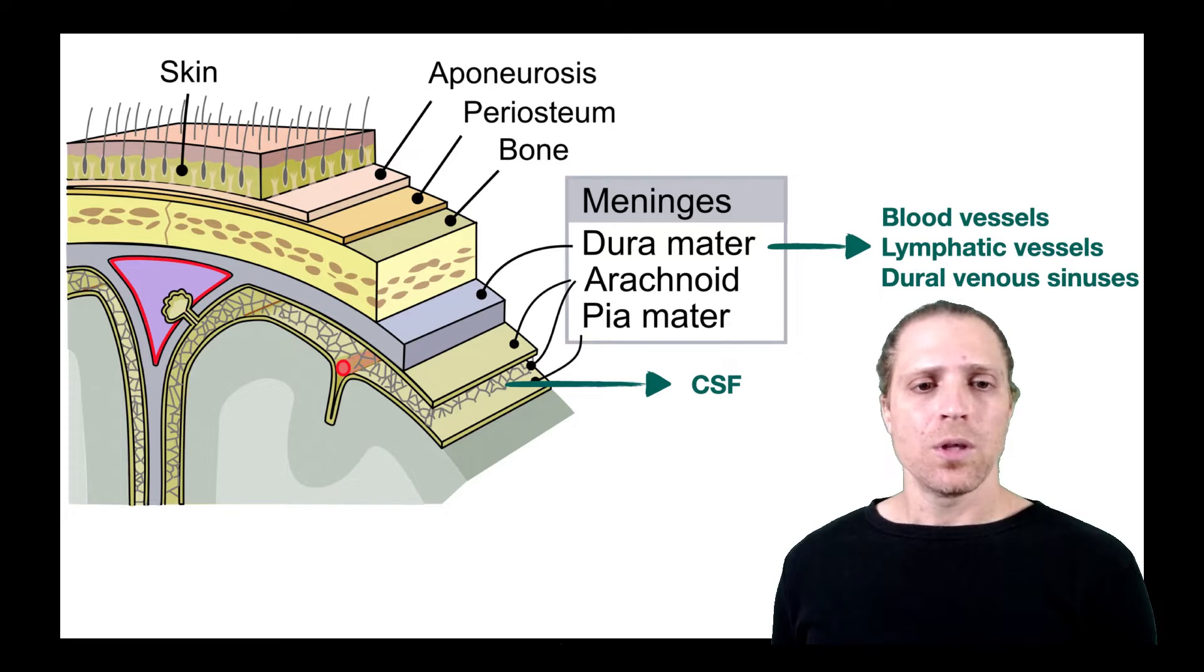To understand this study, we need to know that underneath the skull there is a region called the meninges. The meninges itself is comprised of several layers: the dura mater, as you can see here, as well as the arachnoid, and underneath it the pia mater. In between the arachnoid and the pia mater there is the CSF, and the meninges also is home to specific blood vessels and lymphatic vessels that were recently described by Jonathan Kipnis lab. Also, there are dural venous sinuses within the meninges.